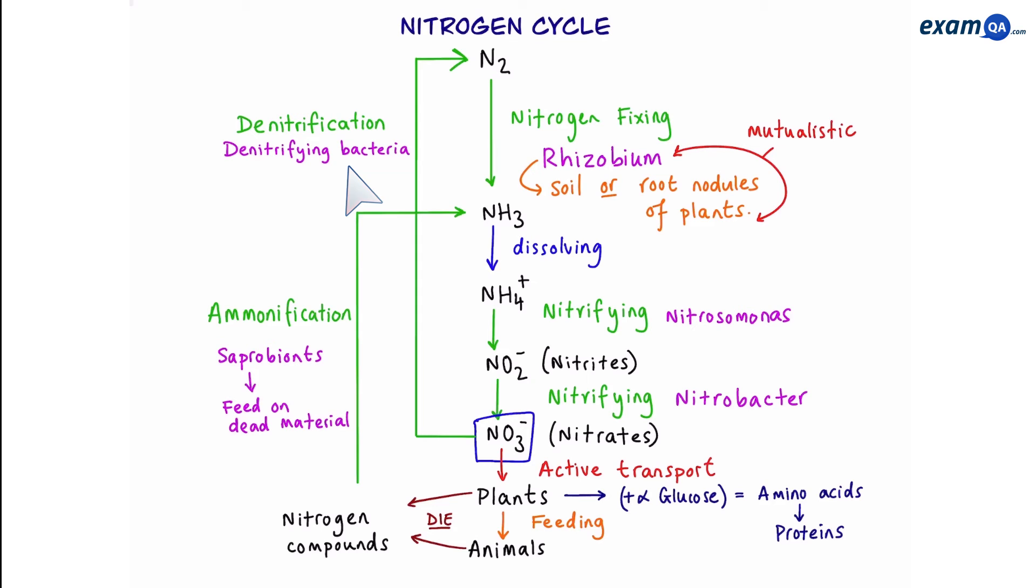So why do they do this? Well, these bacteria live in waterlogged soil, soil which has low oxygen concentration. Or you could say they live in anaerobic conditions. As a result, they take nitrates, rip off the oxygen so that they can use it for respiration, leaving us with nitrogen gas.